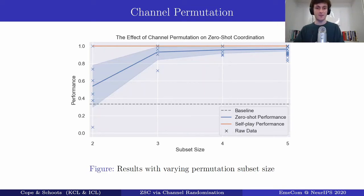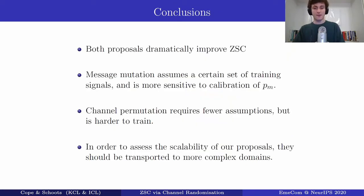increases monotonically towards the more strongly applying the channel permutation. However it does come with a cost and that is longer training times. We find that both proposals dramatically improve the zero-shot coordination. However message mutation requires more assumptions and we didn't talk about that here but it's in the paper and furthermore it's more sensitive to the calibration of pm. Channel permutation doesn't require any assumptions